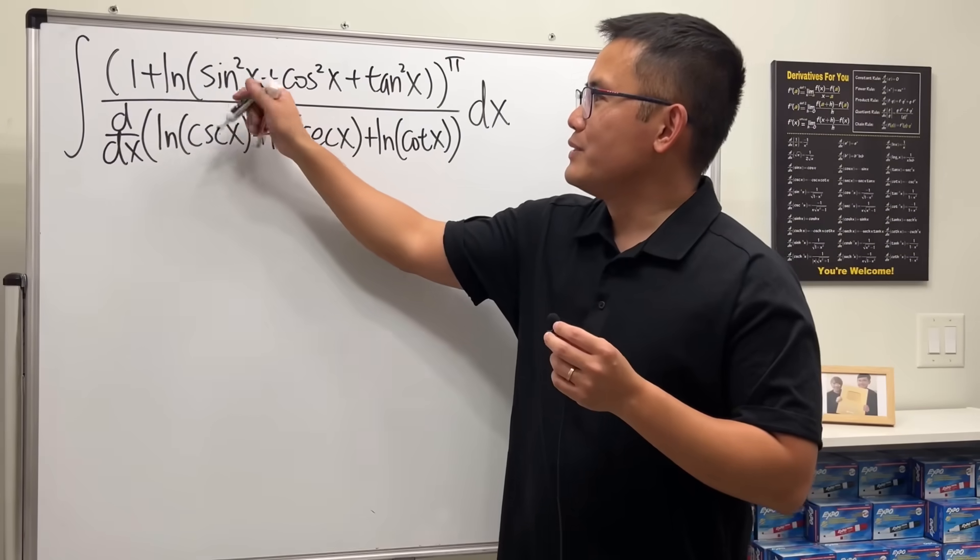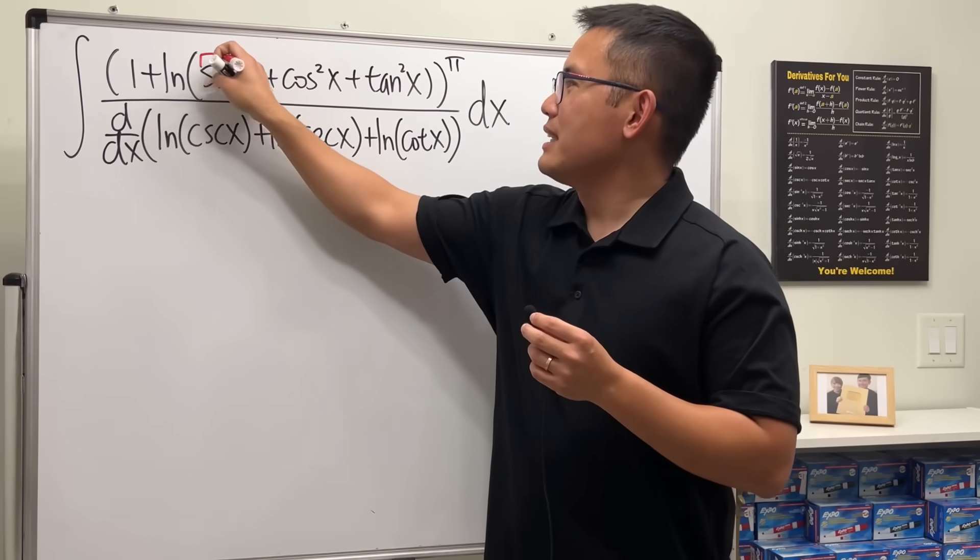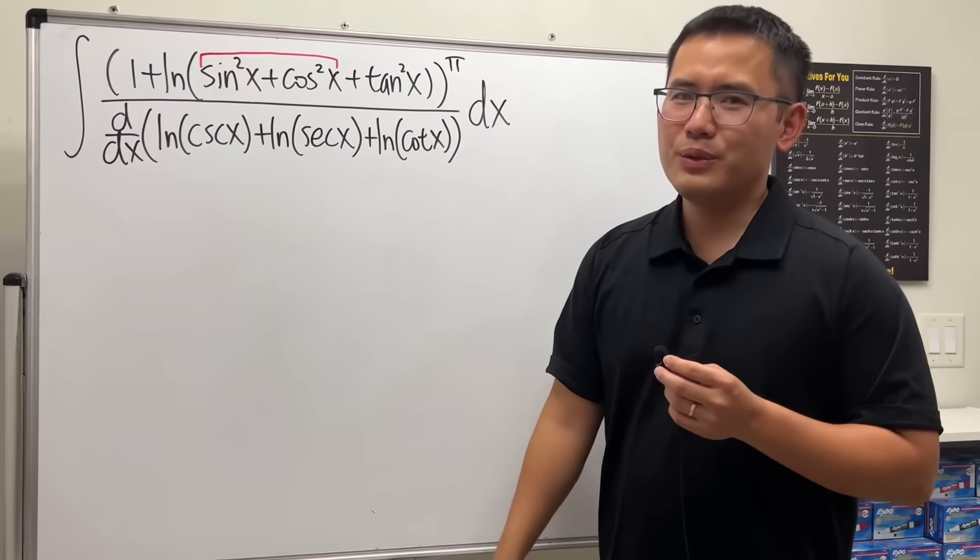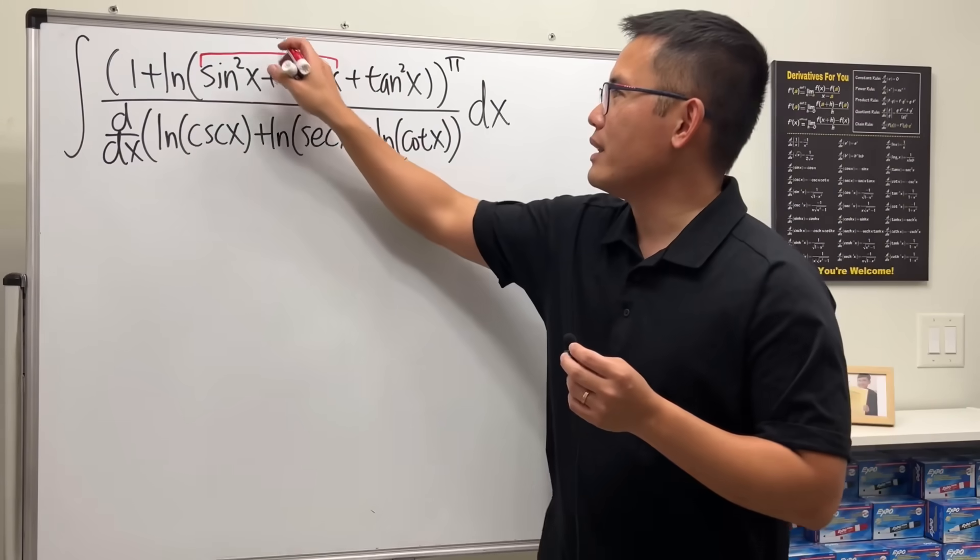Check this out. First, right here, we have sine squared plus cosine squared. That's equal to what? That's just equal to 1, right?